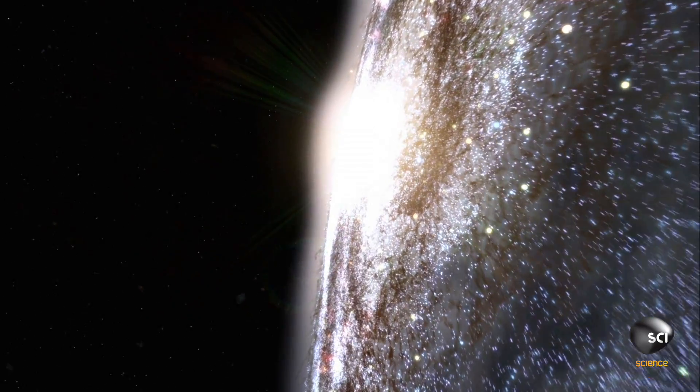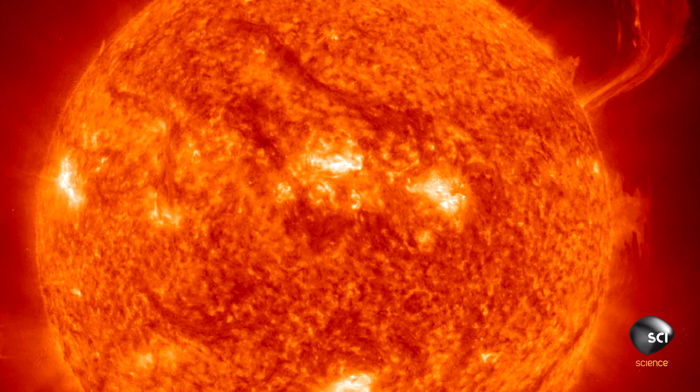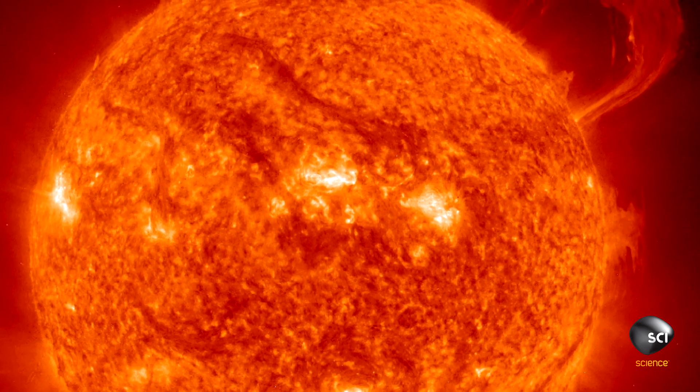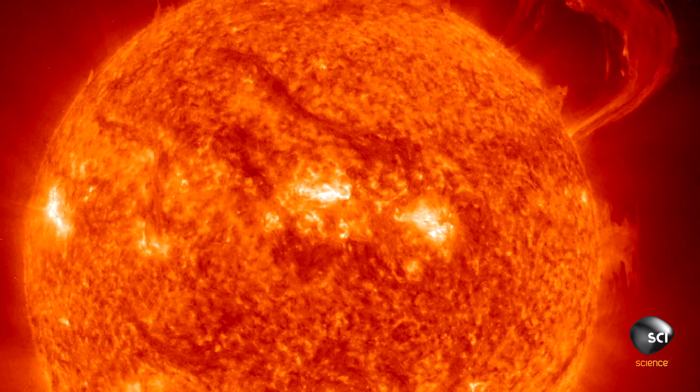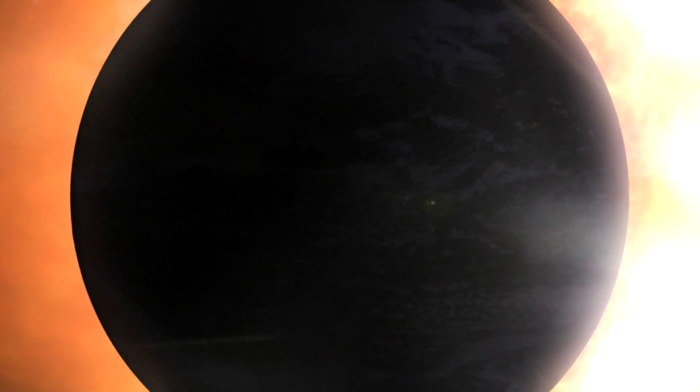It's very easy to dismiss this because it's happening so far away. But what we're actually seeing is the future of our own solar system. One day, our sun will burn itself out and turn into a white dwarf. And it too will become a planet killer.